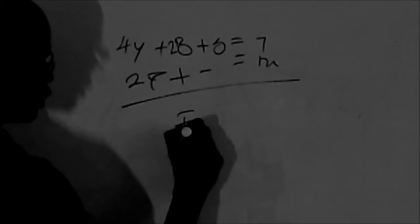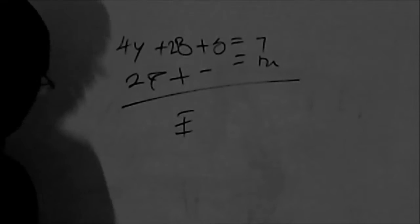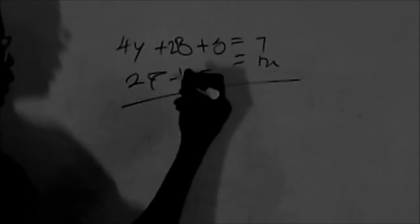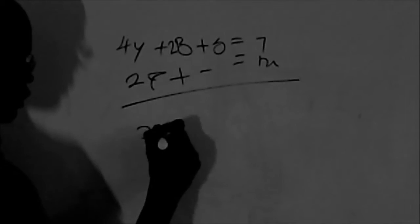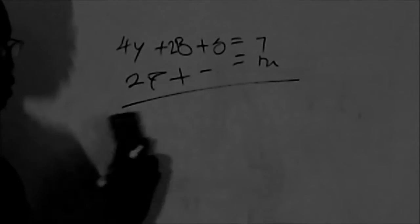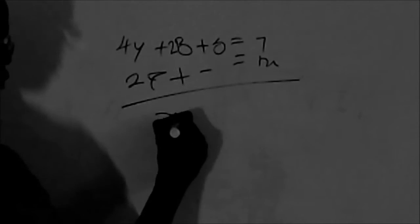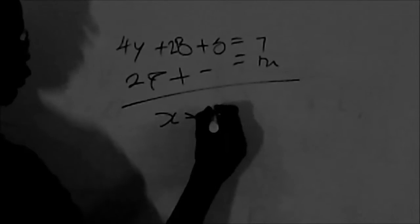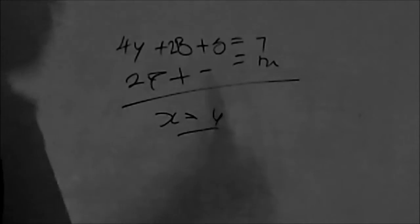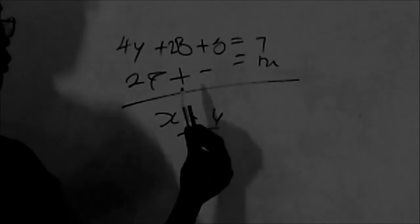In order to get a value of X and Y, the first thing we do is we have to eliminate the value of one of these, value of X or Y.